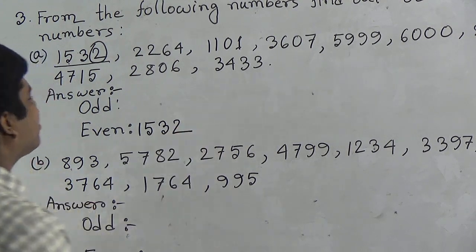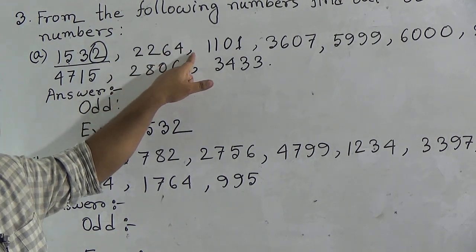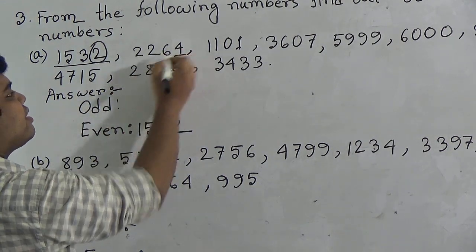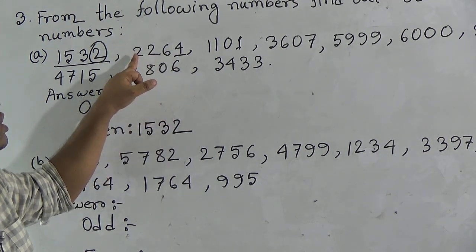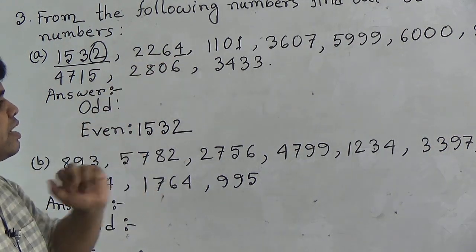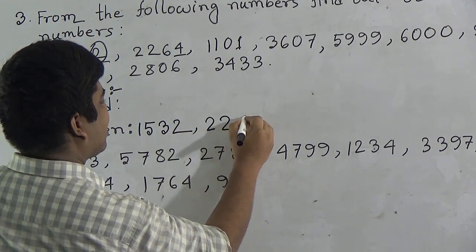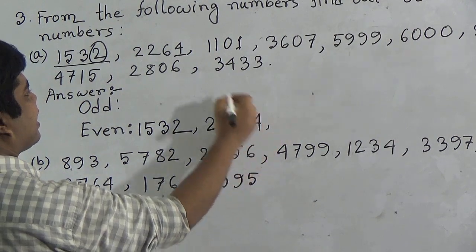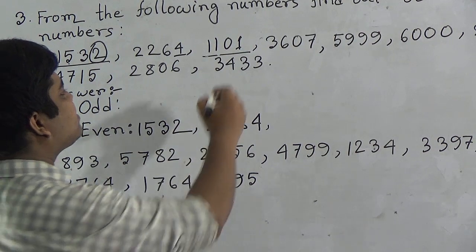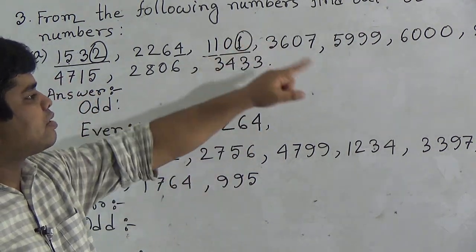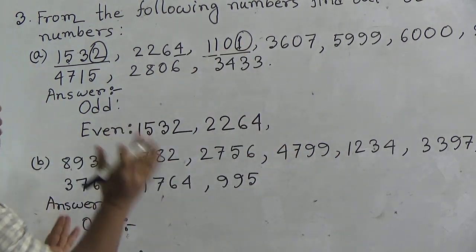Next number is two thousand two hundred sixty-four. The ones place digit is four. As four is an even number, two thousand two hundred sixty-four is even, and we write it in the even number section. Our next number is one thousand one hundred one. The ones place digit is one, and one is an odd number. So one thousand one hundred one is odd, and we write it in the odd number section.